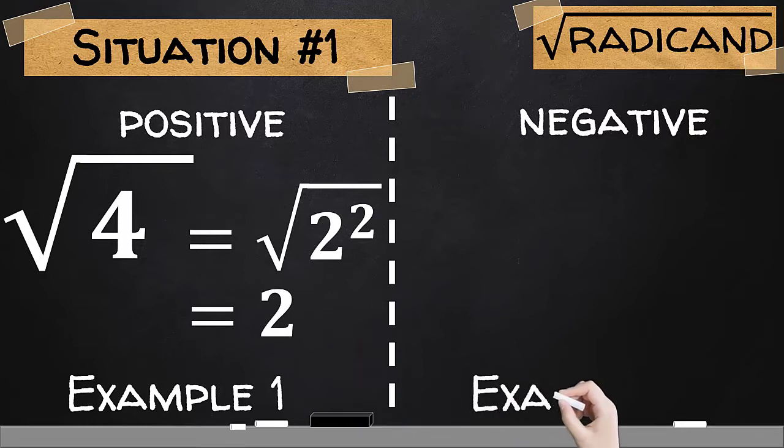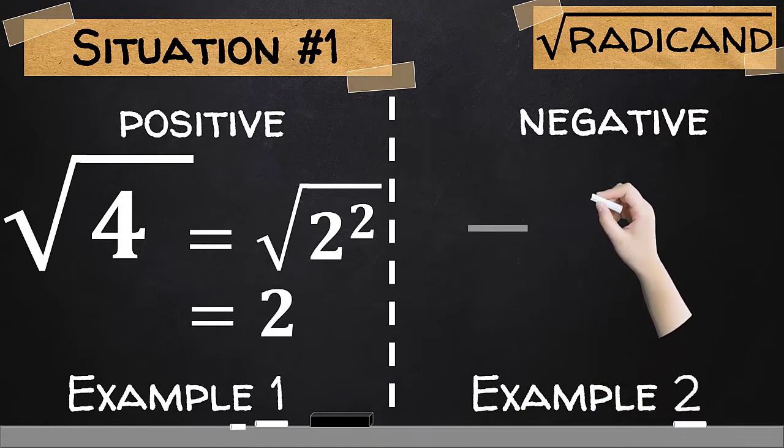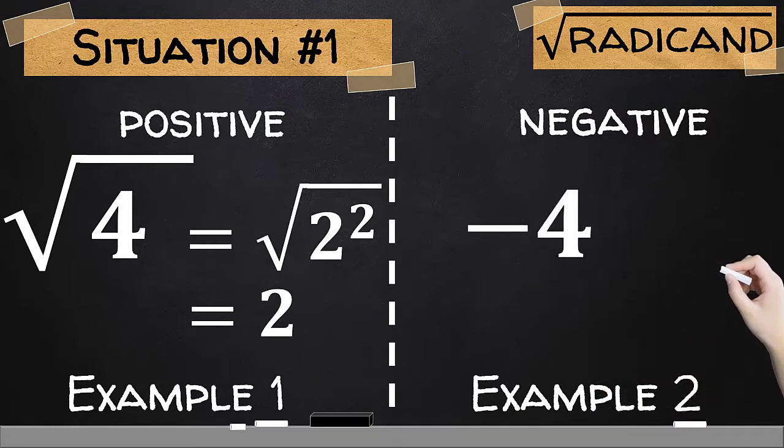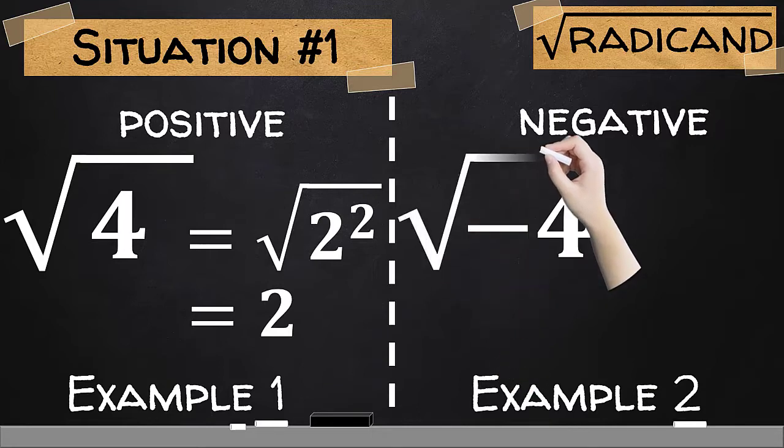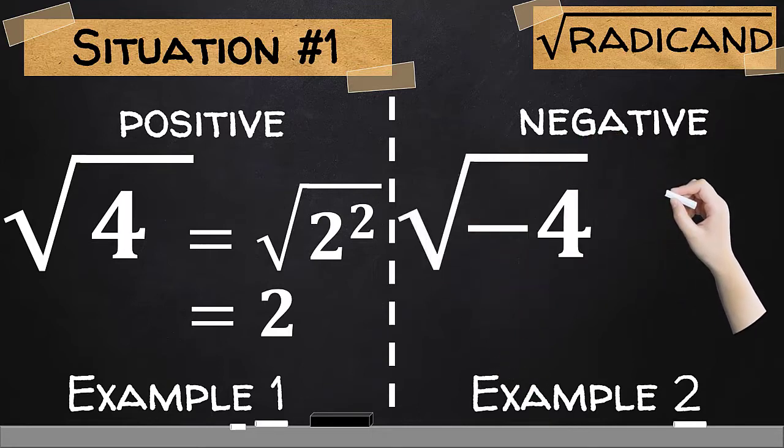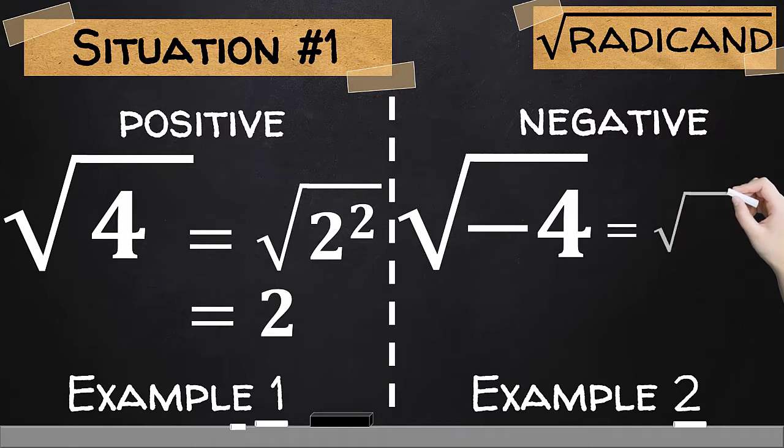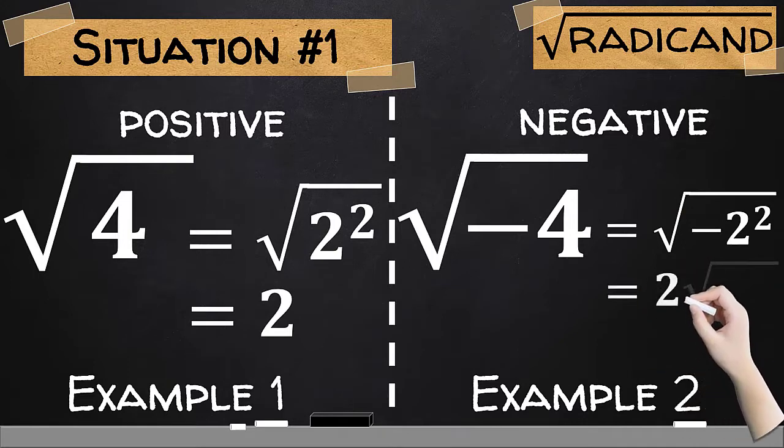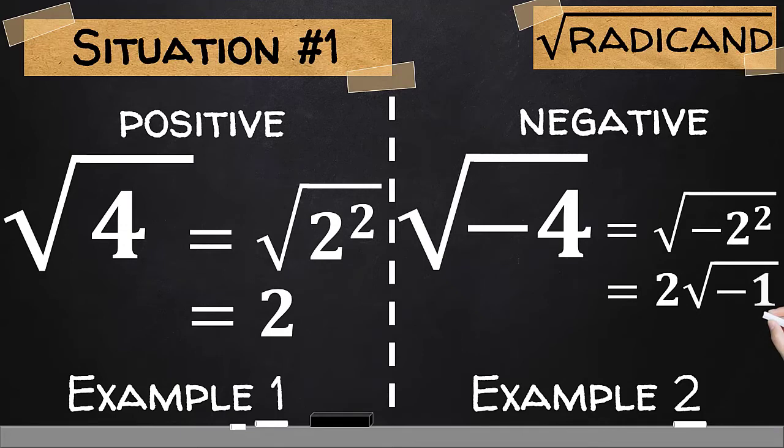However, for example number 2, let's say it's negative 4. When we take the principal square root of negative 4, we could have it as the square root of negative 2 squared. We could simplify 2 squared, say 2 square root of negative 1. However, the square root of negative 1 is not a real number. Hence, we could write it as a symbol i. In short, it could be equal to 2i.